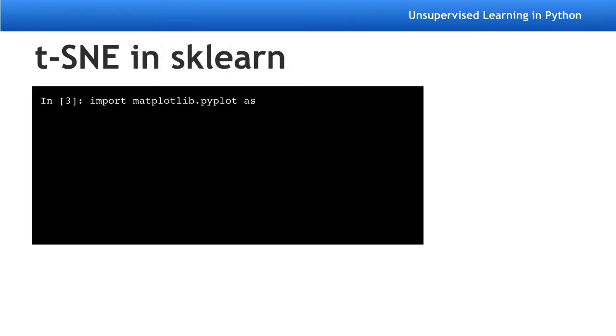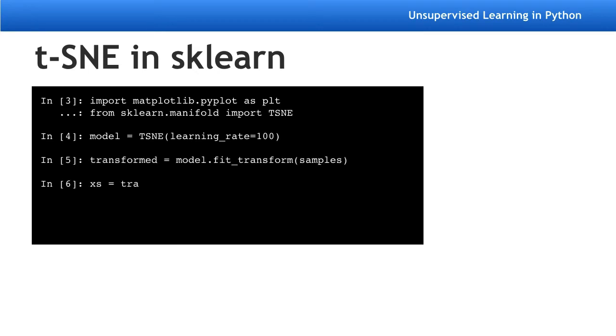To start with, import t-SNE and create a t-SNE object. Apply the fit_transform method to the samples, and then make a scatter plot of the result, coloring the points using the species.